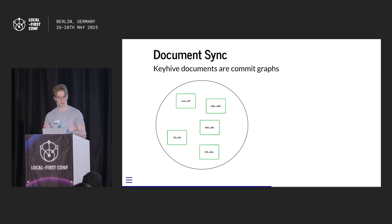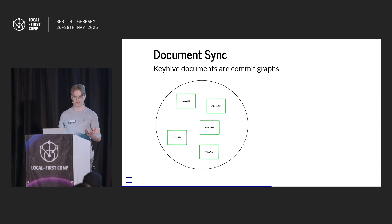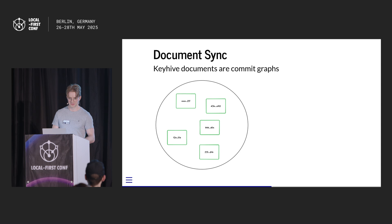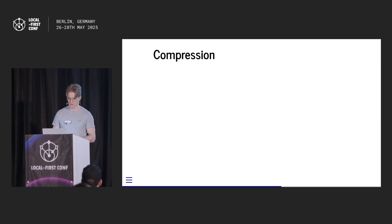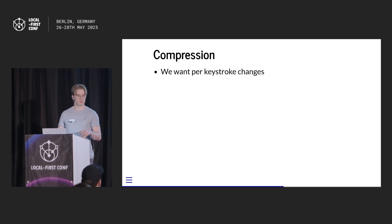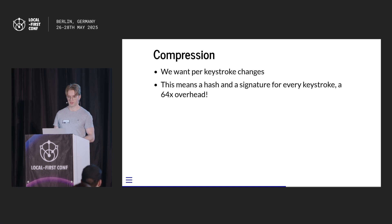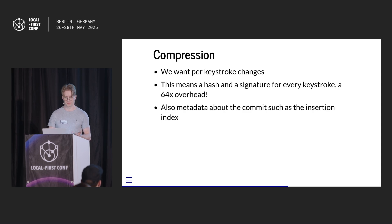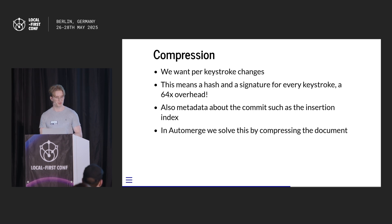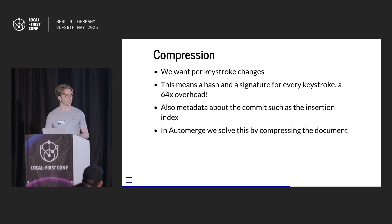We've synchronized the auth graph and which documents are out of sync. Now we're synchronizing an individual document. Automerge documents are just commit graphs — we can represent them as individual commits. But this doesn't work by set reconciliation; we have to handle compression. We want per-keystroke changes, so we produce a lot of commits. Each commit has a hash and a signature, giving a 64x overhead on your average keystroke, plus metadata like the insertion index. For a typical Ink and Switch essay, we're going to have tens of megabytes of hashes before we even get into the 700 kilobytes of actual text.